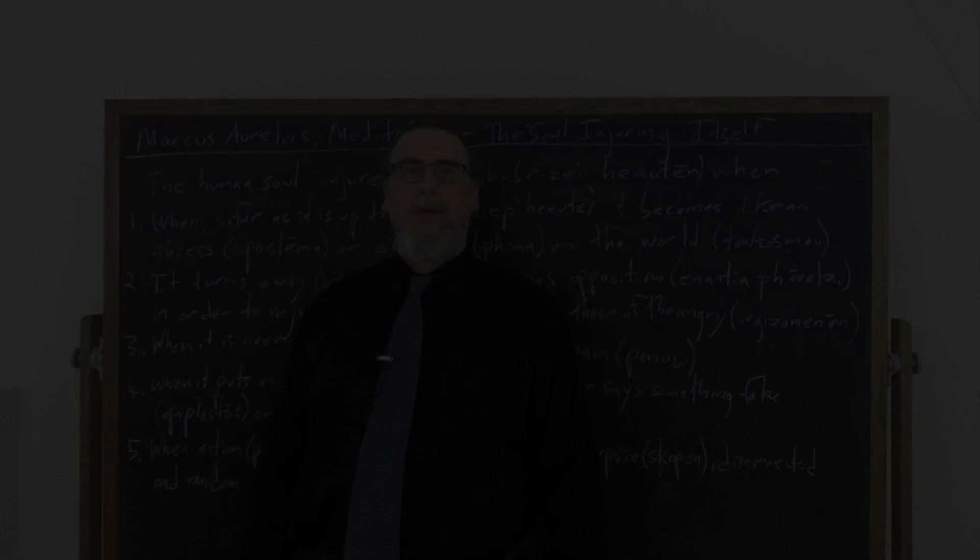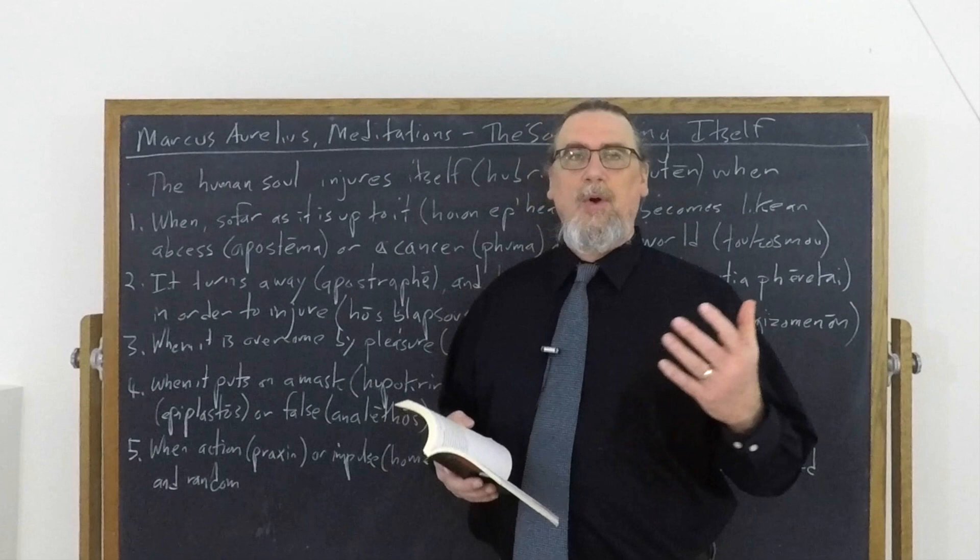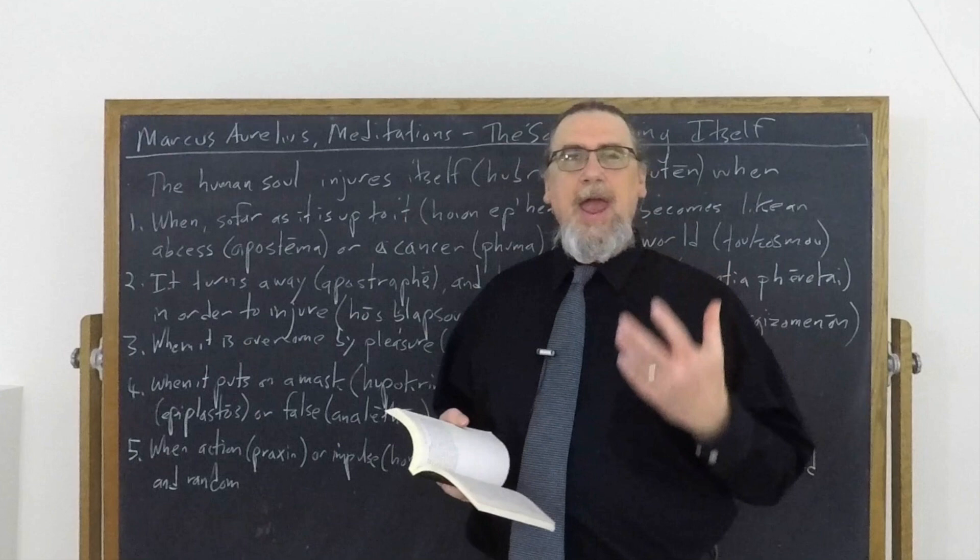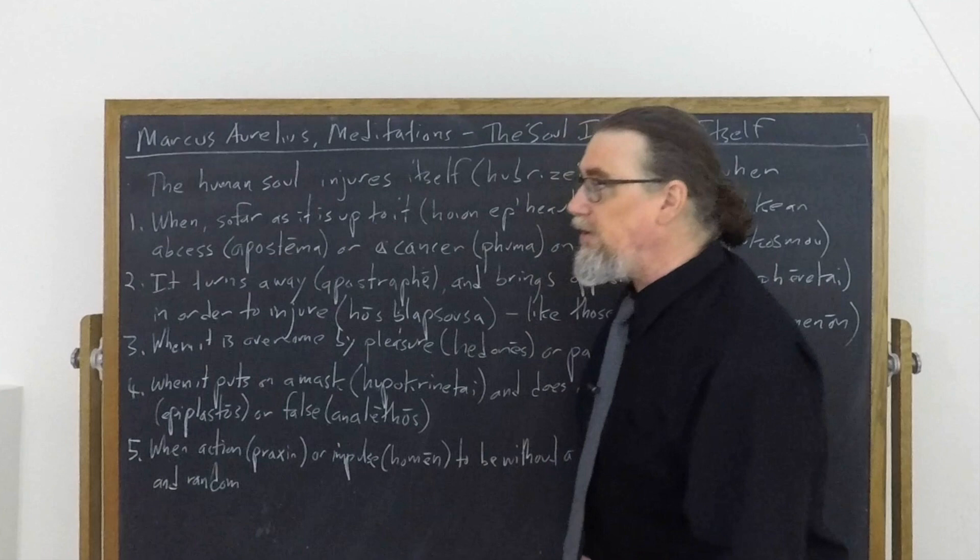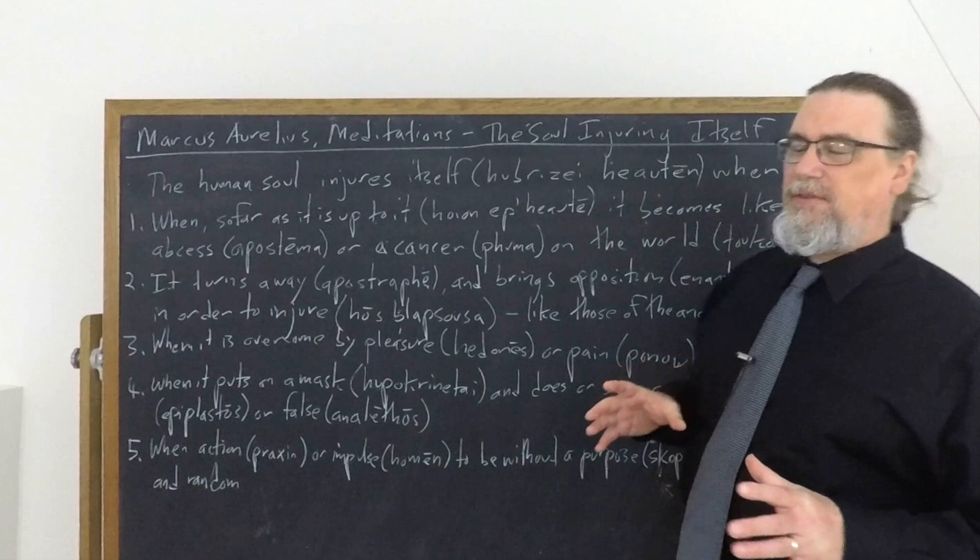In Book 2, Chapter 16 of his Meditations, Marcus Aurelius is going to talk about how it is that the human being, or as he's going to put it here, the human soul, the soul of the human being damages or injures, or to use another translation degrades itself. And he sets out five main ways. This is not a comprehensive list, but five main ways in which this happens. And we want to be really attentive to the language that he's using, because if we pay close attention to it, there's a lot going on here in these passages.